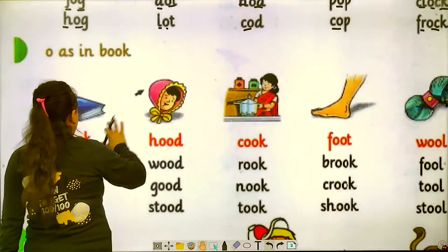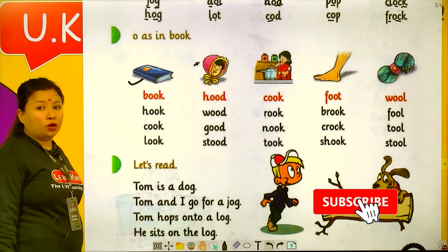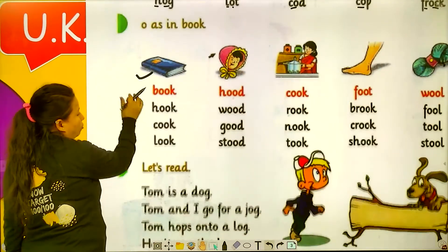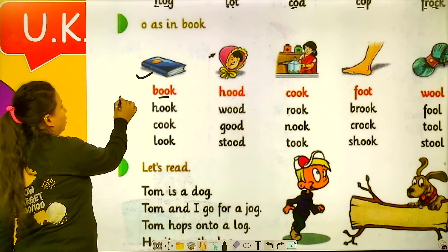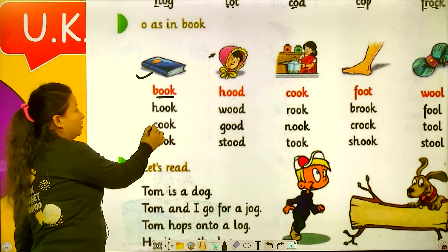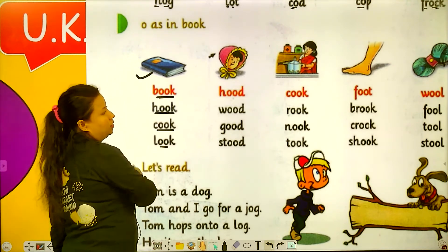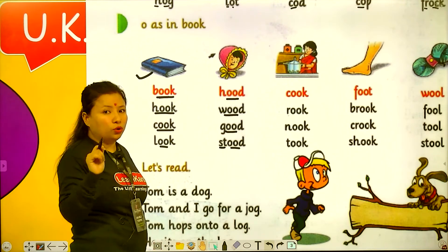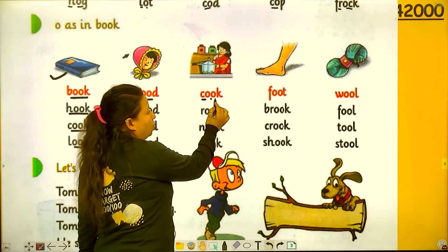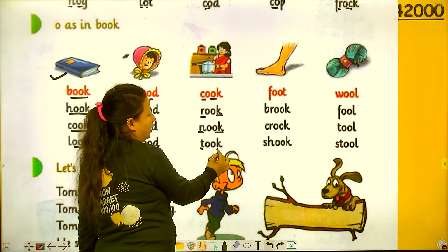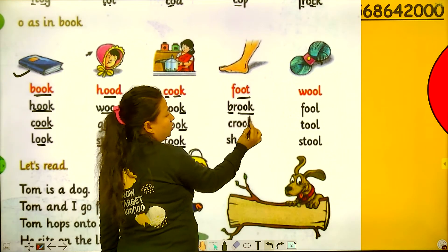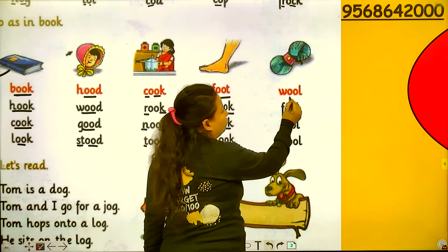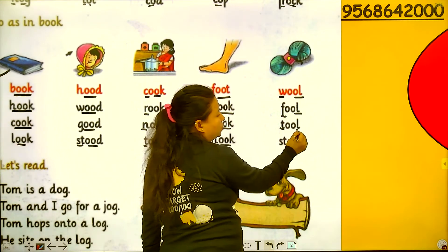Which picture is this? This is book. What is the difference between dog and book? Dog has a single O and book has a double O, so it sounds OO. Like: book, hook, cook, look, good, and stood. Then: cook, rook, nook, and took. Foot, crook, and shook. Wool, fool, and tool.